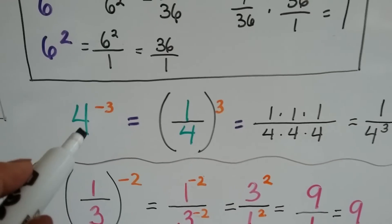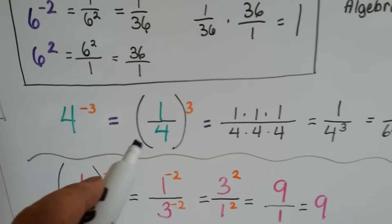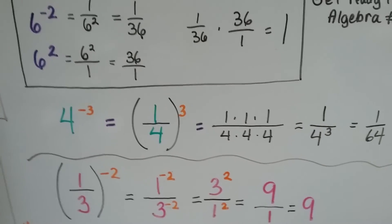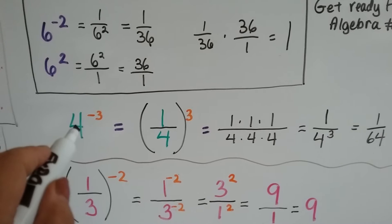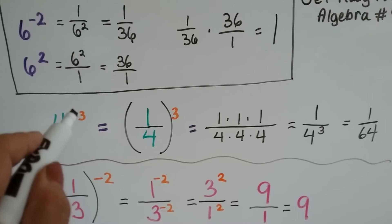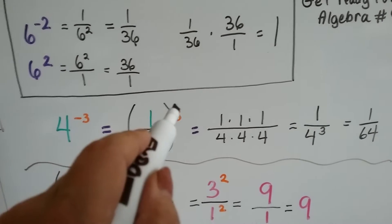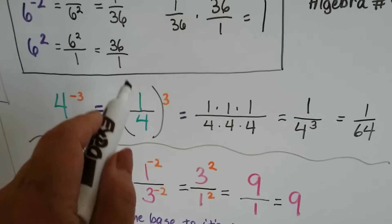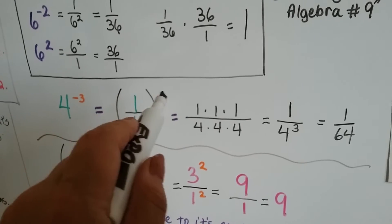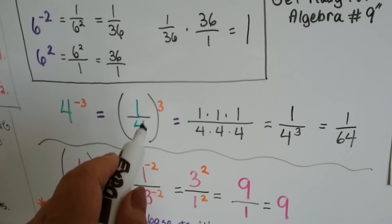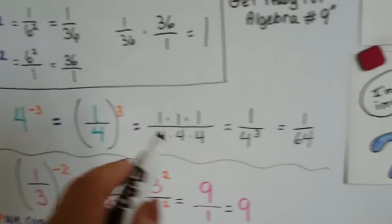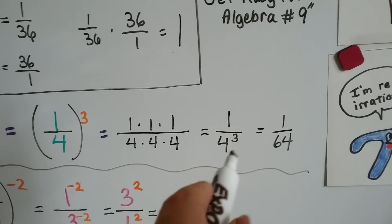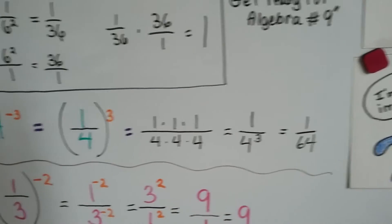Take a look at this one. We've got 4 to the negative 3rd. It could also be written as (1 fourth) in parentheses with the little 3 exponent on the outside. We took it from being a whole number to being a fraction, and this negative 3 became a positive 3 because we turned the base into a fraction. This means 1 times 1 times 1 over 4 times 4 times 4. 1 times 1 times 1 is 1, and 4 times 4 times 4 is 64, so it would be 1 64th.